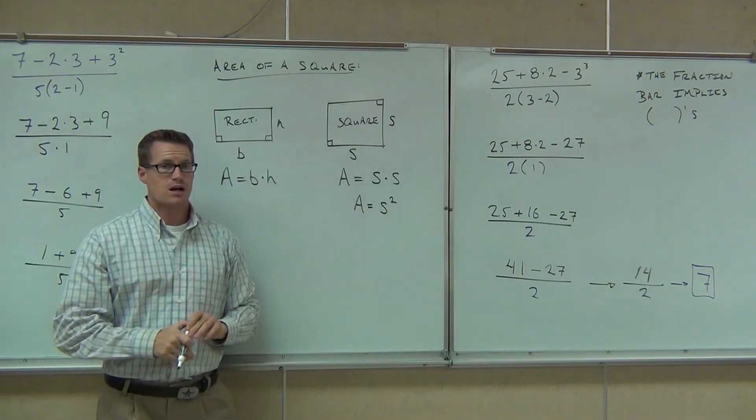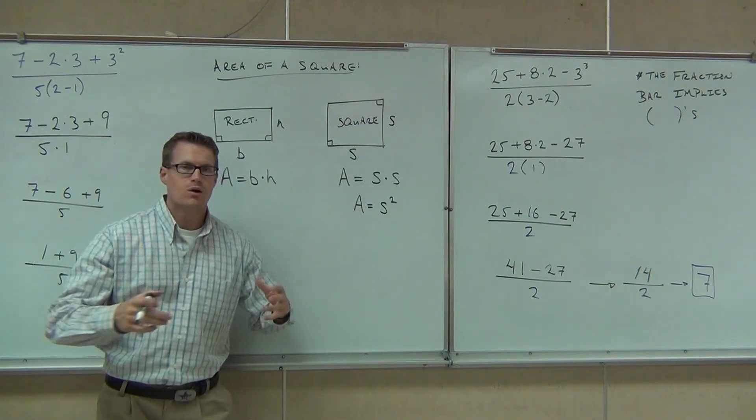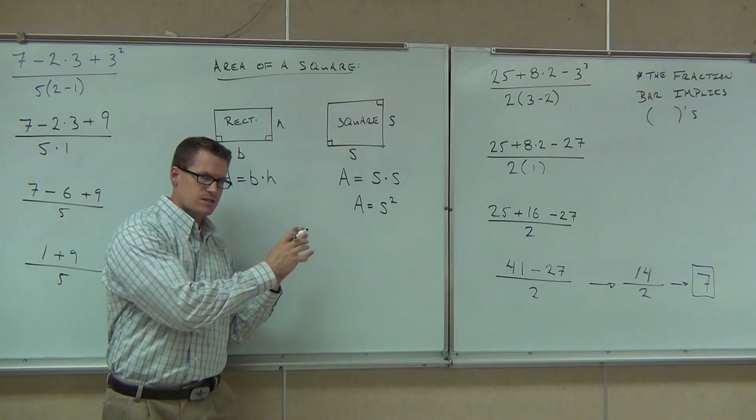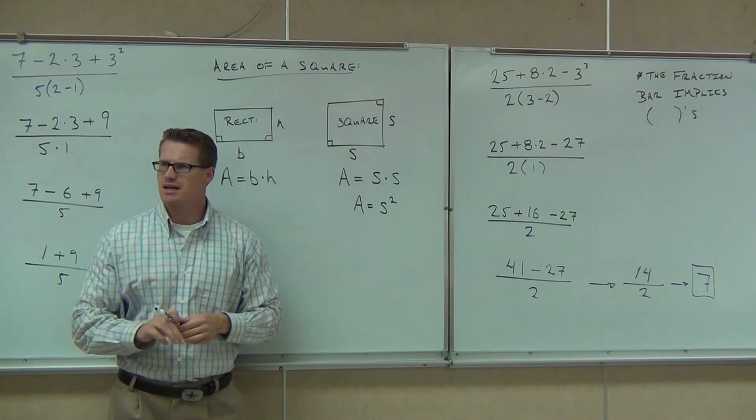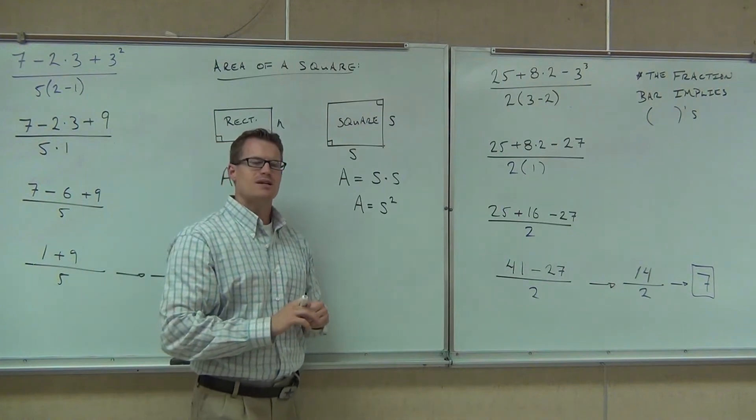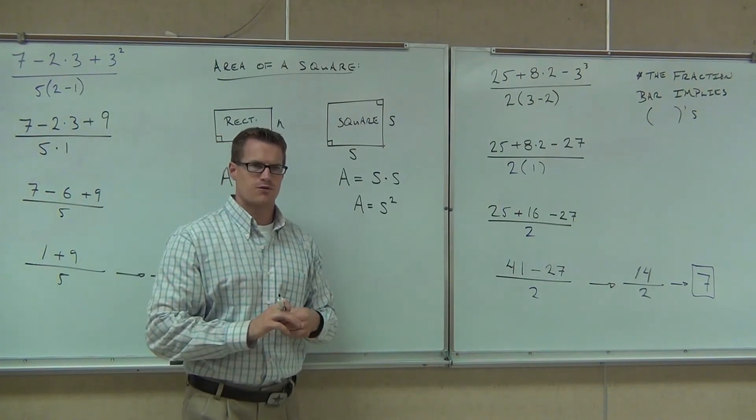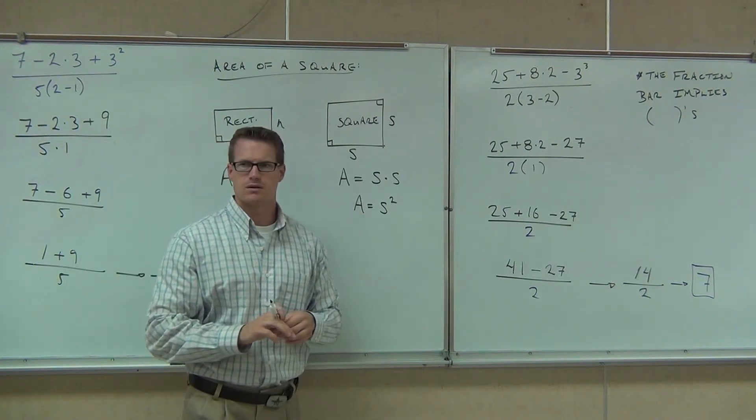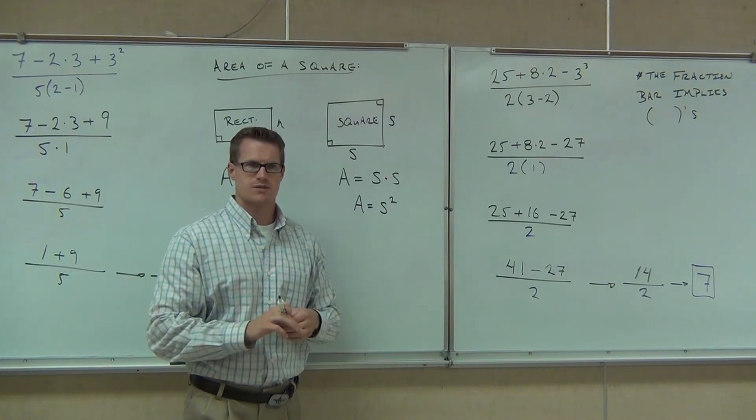So when we're looking for the area of a square, we just take the side itself and square it. It brings me to my next question. If I tell you something's a square, how many sides do I need to give you for you to find the perimeter and the area? One.